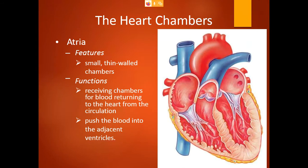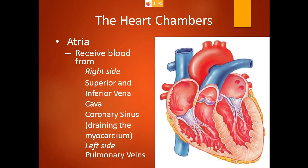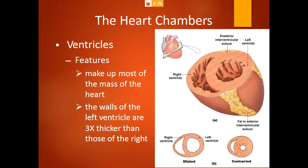Regarding the interior chambers: the atria are thin-walled. Openings into the right atrium include the superior vena cava, inferior vena cava, and coronary sinus. Regarding the ventricles, the left ventricle wall is thicker than the right ventricle wall. When you take a section of the heart you can identify this clearly.